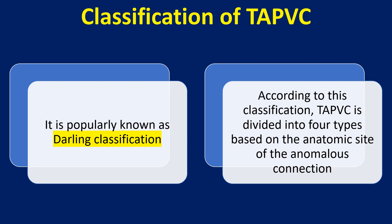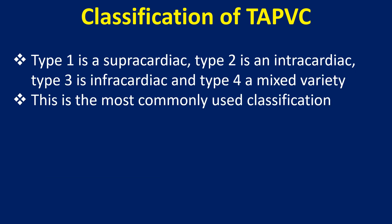According to this classification, TAPVC is divided into four types based on the anatomic site of the anomalous connection. Type 1 is supracardiac, type 2 is intracardiac, type 3 is infracardiac, and type 4 is a mixed variety. This is the most commonly used classification.